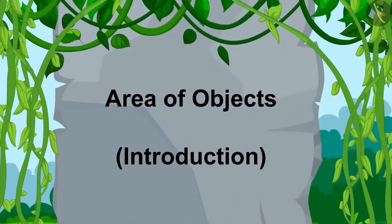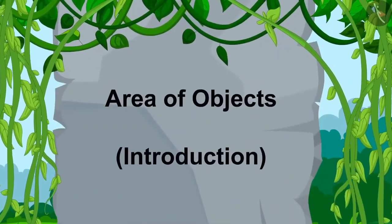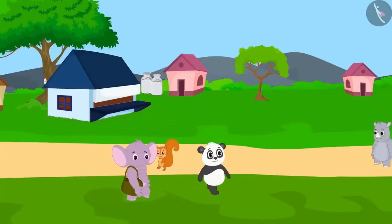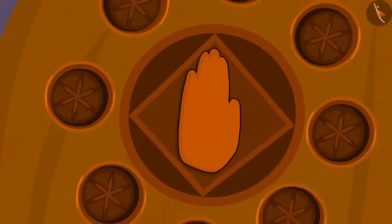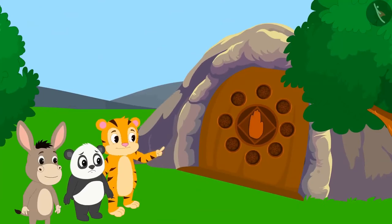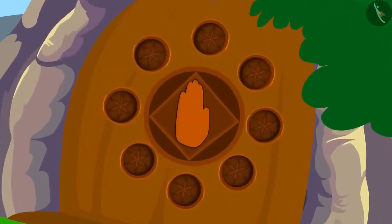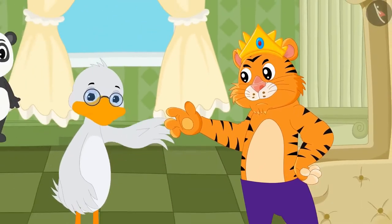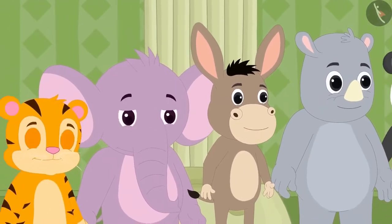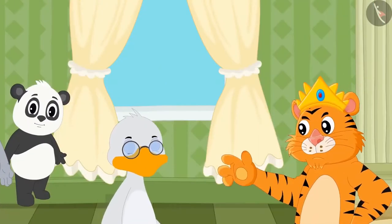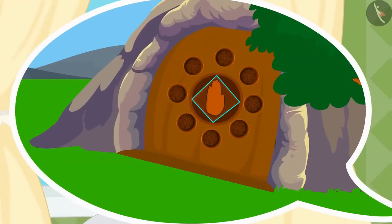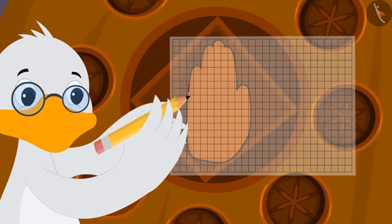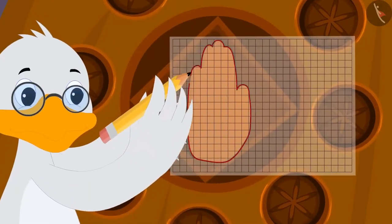In this video, we will learn to estimate the area of objects. There is a lot of chaos in Champapur today. This morning, a door has been found in the cave. But this door can only be opened by the hand of one of the villagers. The king of Champapur has entrusted Barbole uncle with the responsibility of finding the villager whose hand impression matches the hand impression on the door. Uncle immediately traced the hand impression on the door onto a paper.